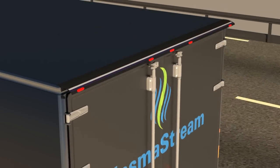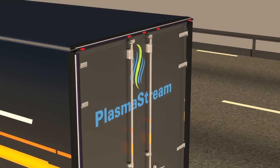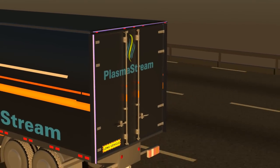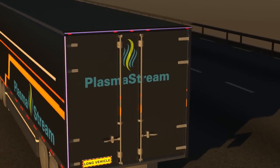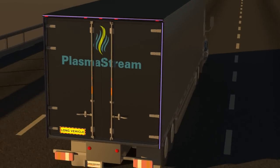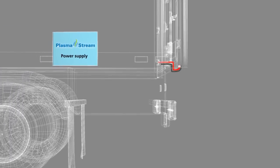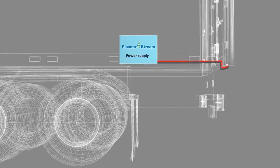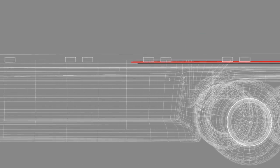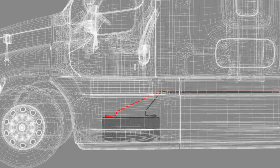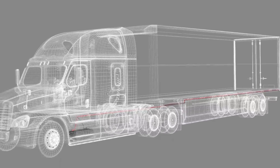The plasma actuator system is easy to install and will be mounted on the aft of the trailer along the top as well as the two side edges. The assembly is connected to the output of a proprietary power supply that is mounted on the trailer. The input of the power supply is connected to a vehicle battery power supply circuit on the trailer.